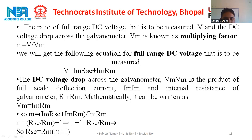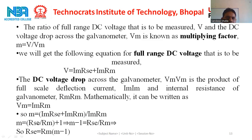The multiplying factor M equals IM·RSE plus IM·RM divided by IM·RM, which simplifies using M = V/Vm where Vm = IM·RM and V = IM·RSE plus IM·RM. Solving this equation, we finally get RSE = RM(M − 1).